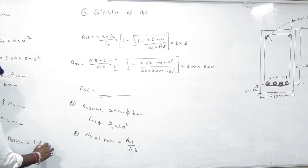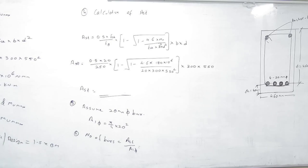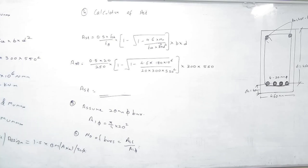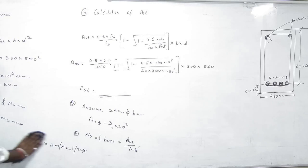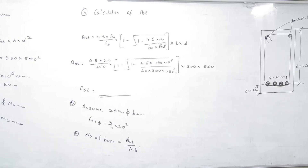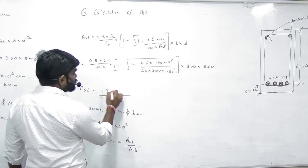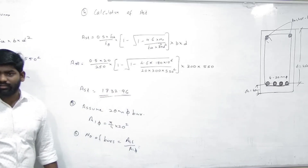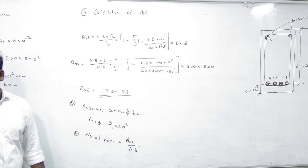BM alag hai, MU alag hai. Jab simply bending moment bola ho toh BM likhna hai. Axial/safe — yeh alag naam hain bending moment ke. AST calculate karo — answer around 1700 mm² ke karib aayega.